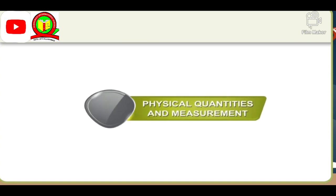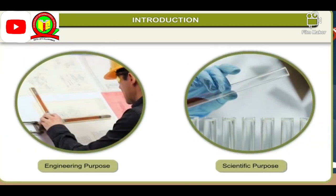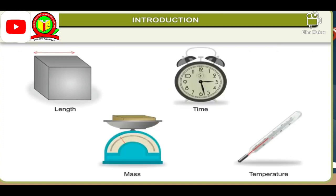Measurement is highly important for the accurate study of matter. Accurate and precise measurements are very much needed for engineering and scientific purposes too. In previous classes, we have already learnt about physical quantities such as length, mass, time and temperature and their SI units. We have also learnt about the direct measurement of these physical quantities.